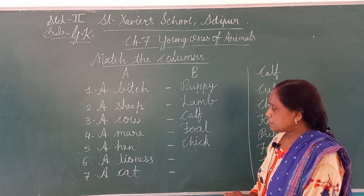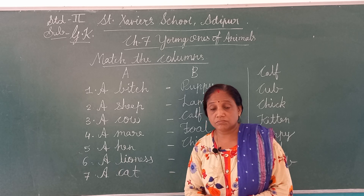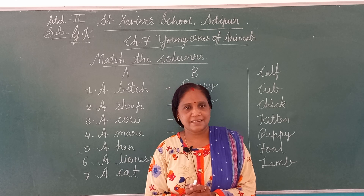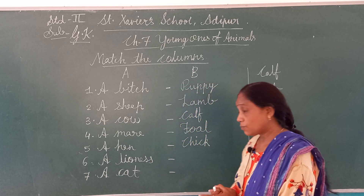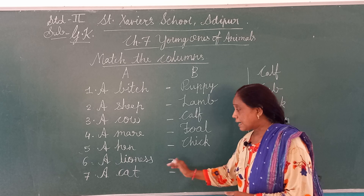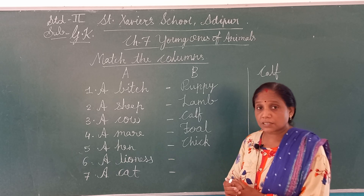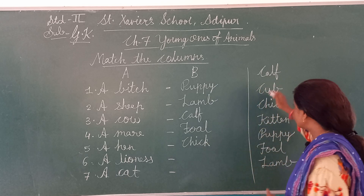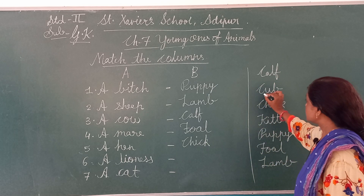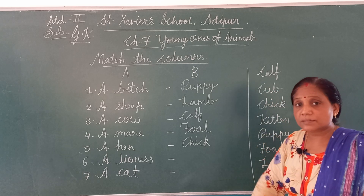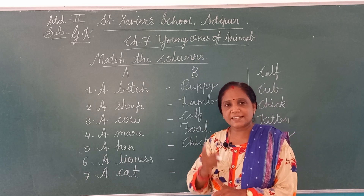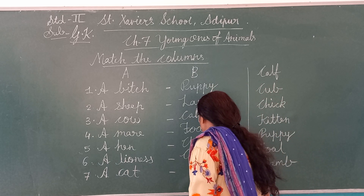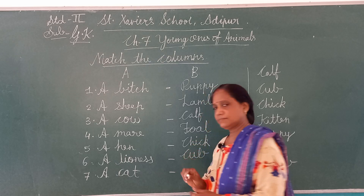Now comes 6th number — a Lioness. अभी शेरनी के बच्चे को क्या बोलेंगे? याद है? वो भी C letter से start होता है। तो यहाँ से ढूंढो — यह रहा: C-U-B, Cub. शेरनी के बच्चे को Cub बोलेंगे। तो यहाँ लिखेंगे C-U-B. Complete.